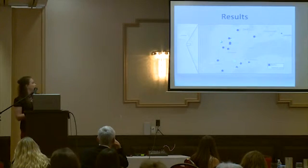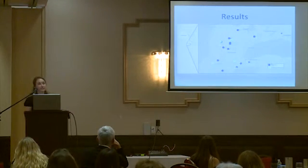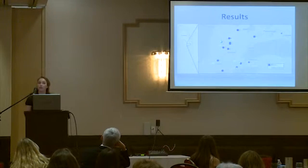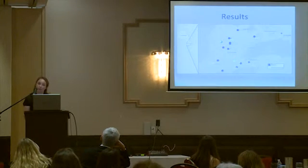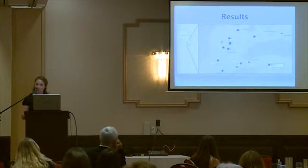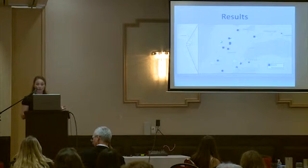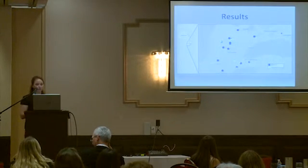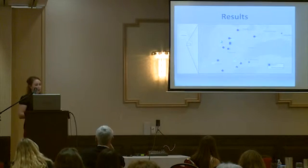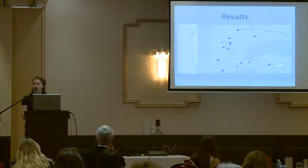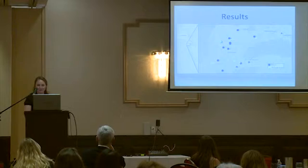This map shows all of the sites we sampled. Farms are indicated by blue circles representing goat prevalence, and natural areas are green triangles representing wildlife prevalence. The size of the symbols indicates relative prevalence — larger symbols represent 100% prevalence. The main message is that there doesn't seem to be a geographic cluster of Coxiella burnetii; it's everywhere in Southern Ontario, which from a public health perspective is not great news.